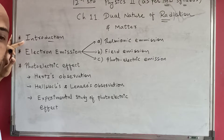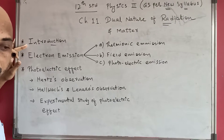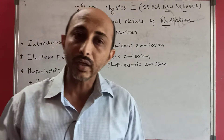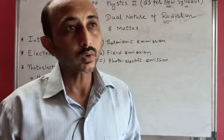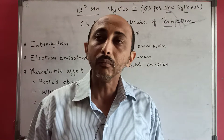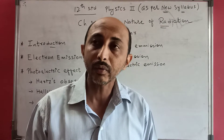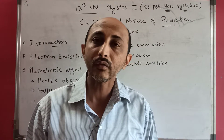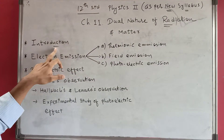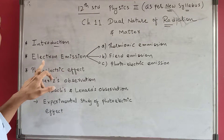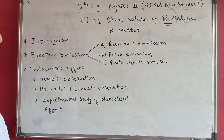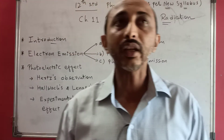Many scientists like J.J. Thomson, Hertz, and Lenard proposed theories that particles when exposed to light emit alpha, beta, and gamma rays. As time went on, the discovery of the electron, mass of the electron, and charge on the electron were made by Millikan and many more physicists. These discoveries are all covered in the introduction part. The important topic here is electron emission.